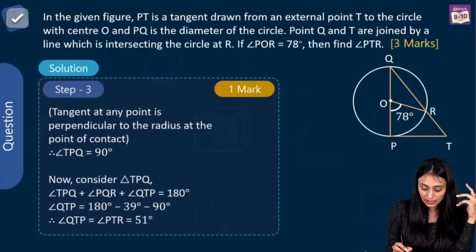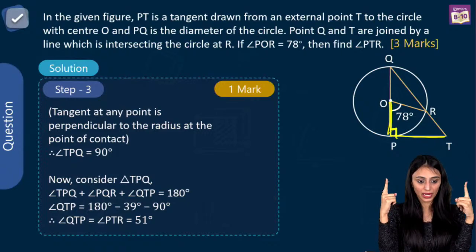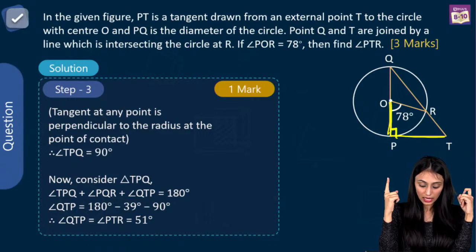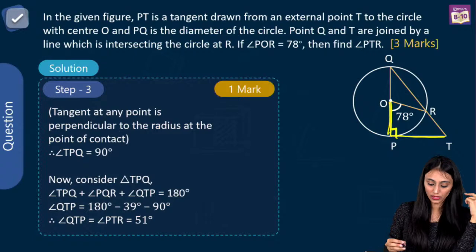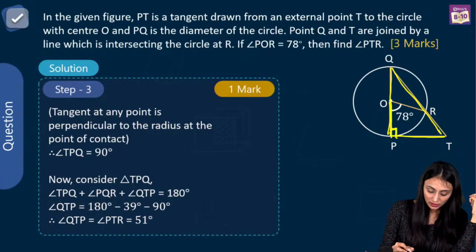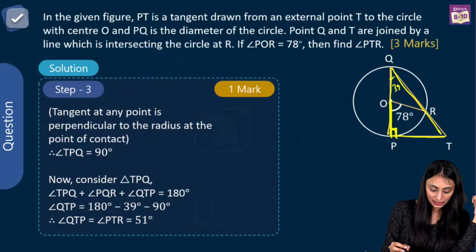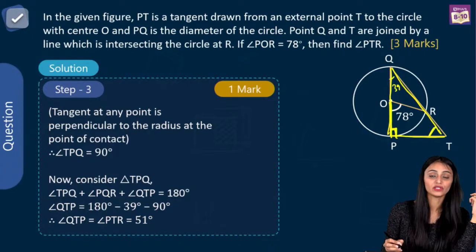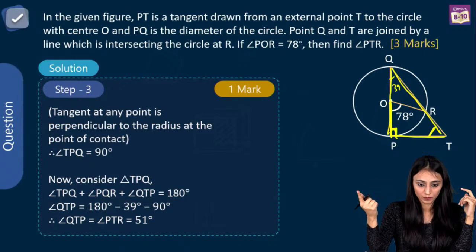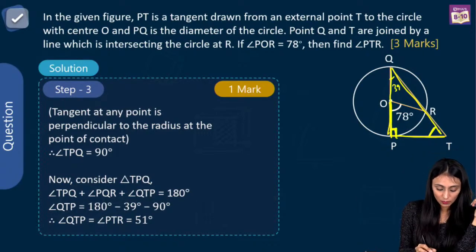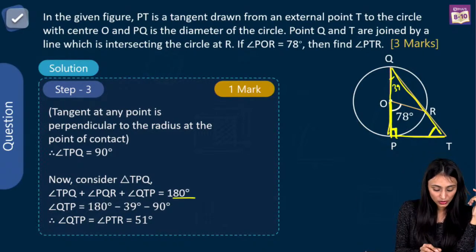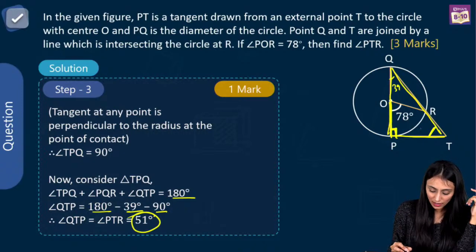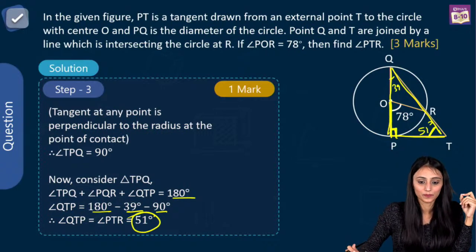Now, this is the tangent to the circle and radius and tangent are perpendicular at the point of contact, so this angle is 90 degrees. Now in this bigger triangle TPQ, this angle is 90 degrees, this is 39 degrees. From here, you have the value of this angle using the angle sum property — adding all of them up gives 180 degrees. Put these values, subtract them from 180 degrees, and you get 51 degrees. So angle PTR is 51 degrees.